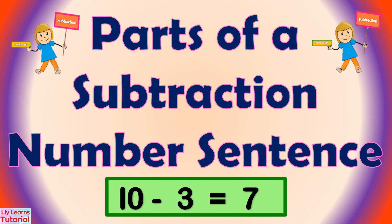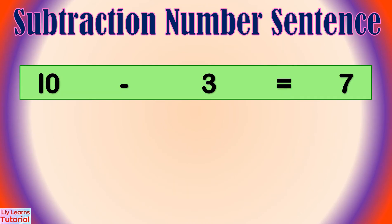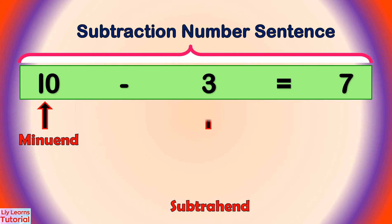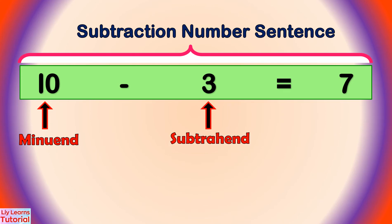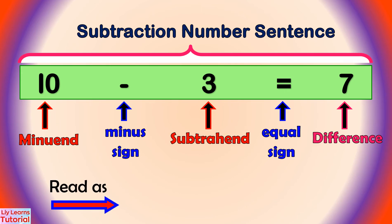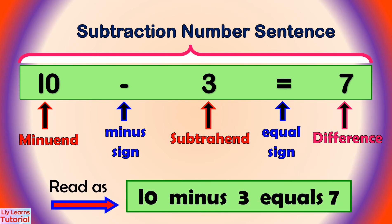Let's look at the parts of a subtraction number sentence. This is a subtraction number sentence: 10 is the minuend, 3 is the subtrahend, 7 is the difference. This is a minus sign and this is an equal sign. We can read this as 10 minus 3 equals 7.